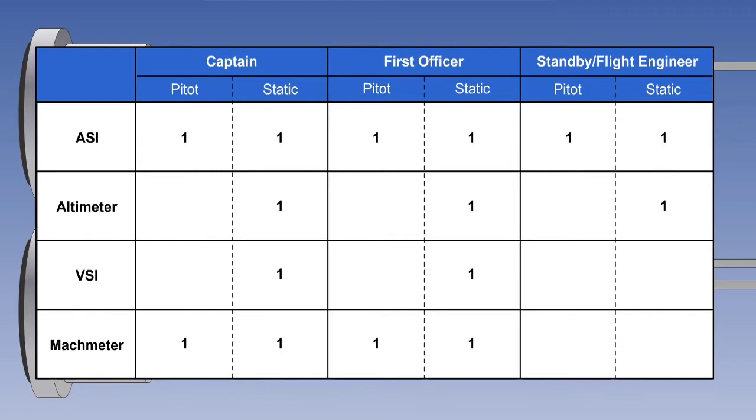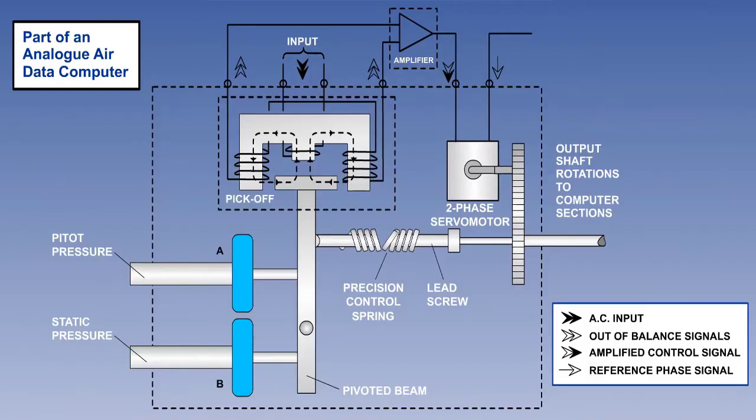could introduce leaks or blockages. A neater and more reliable system emerged in the 60s with the advent of early analog computing devices.